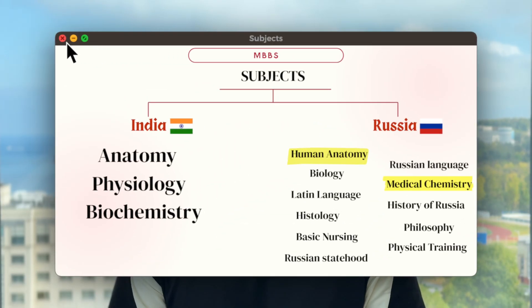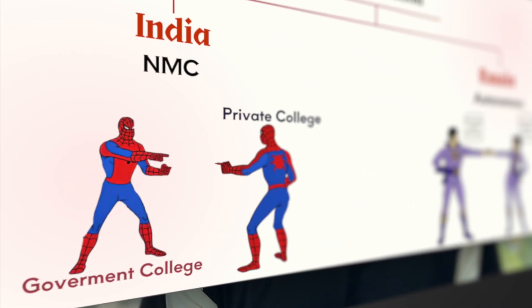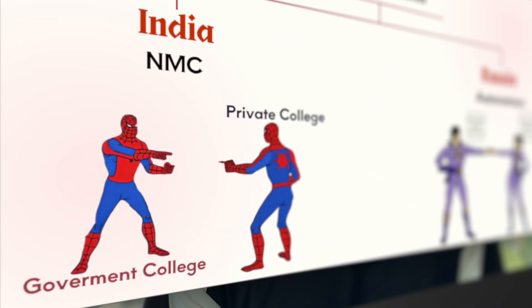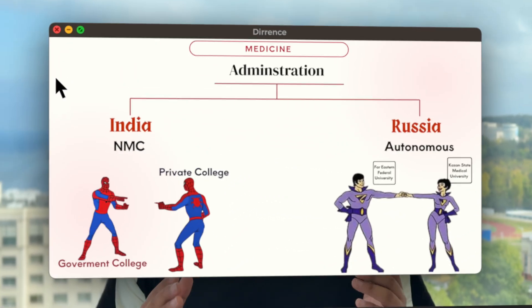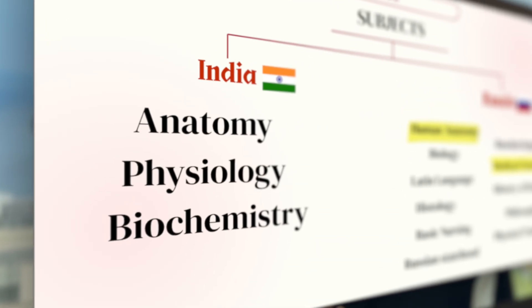In India, everything is centrally controlled by the NMC. The NMC decides subjects, syllabus, teaching methods, and exam pattern for all colleges in India. This means whether you study in Mumbai or Delhi, the subjects of your first year will be the same — for example, anatomy, physiology, and biochemistry. Everything is standardized by NMC in India.